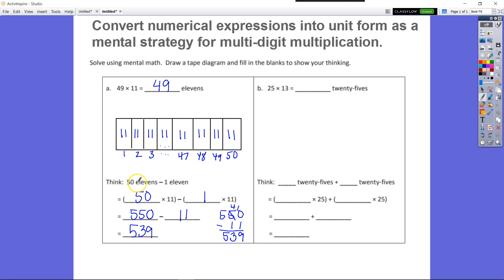So now we have 50 groups of 11 minus 1 group of 11, so we're going to cross this out.